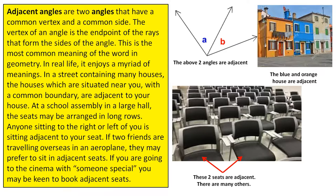At a school assembly in a large hall, the seats may be arranged in long rows. Anyone sitting to the right or left of you is sitting adjacent to your seat. If two friends are travelling overseas in an aeroplane, they may prefer to sit in adjacent seats.